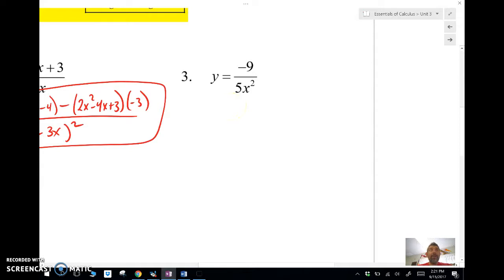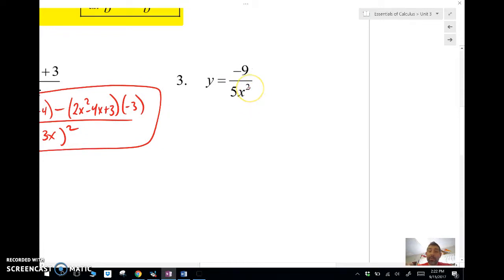Let's take a look at another one. Negative 9 over 5x squared. So this is not a binomial, it's a monomial. We can just bring this up as x to the negative 2. Now we can just use our power rule. Using the power rule, I'm going to get 18 fifths x to the negative 3.